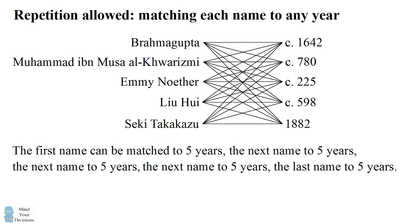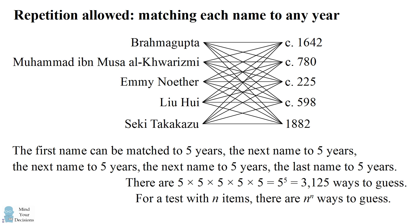So we have five different choices where we have five different years. So the total number of possibilities is 5 multiplied by itself five times, which is 5 to the power of five, or 3125 ways to guess. On a test with n items, the pattern is similar. Each of the n items has n different choices. So there will be n to the power of n ways to guess.